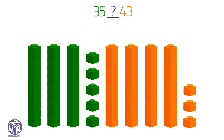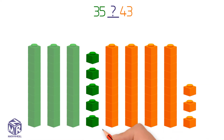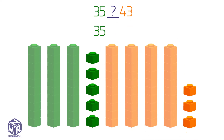35 has three tens and five ones. 43 has four tens and three ones. To compare 35 and 43, we first compare the tens. Three tens is less than four tens, so 35 is less than 43.